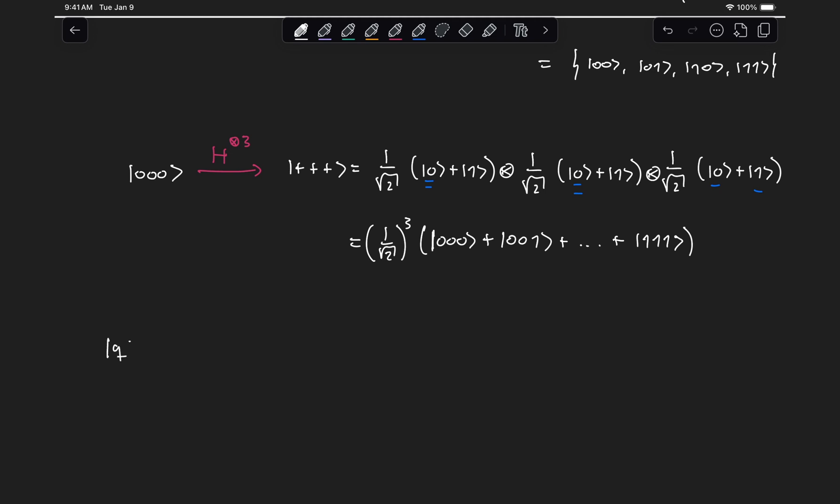Let's say we have a state q equal to one over two, zero, zero, minus zero, one, plus one, zero, minus one, one.